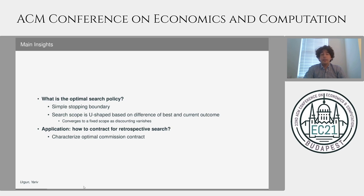The main insight we deliver is that the optimal search policy turns out to be surprisingly simple. There is going to be a rather simple stopping boundary, and the search scope is going to be a U-shaped function based on the difference between the best observation we have seen as well as the current one. And this U-shape flattens out if discounting is to vanish.